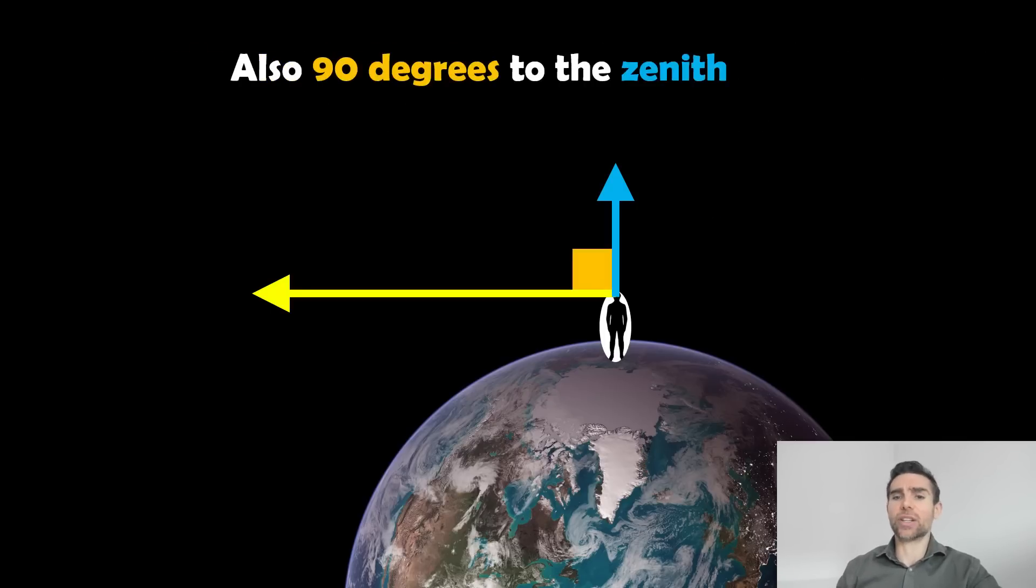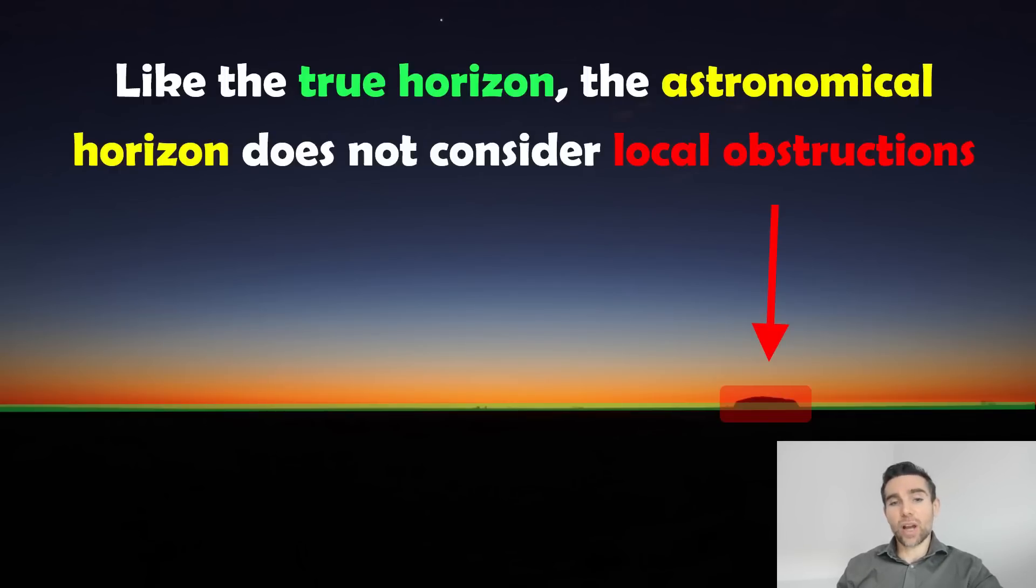So it's basically 90 degrees to the zenith like this here, which is different, which is why it looks slightly different angle to our true horizon. So like the true horizon, the astronomical horizon doesn't take into consideration any local obstruction. For example, it's just like the theoretical horizon. It doesn't take into consideration any mountains that you might have there, any other obstructions. But the main difference between the two is one's on a plane and one's a circle on a sphere that you're kind of inside of basically.